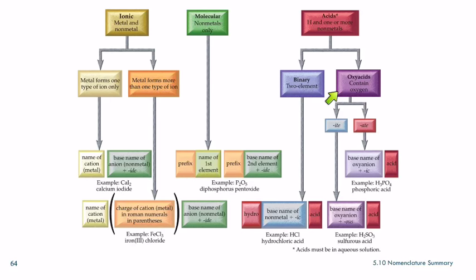So the acids we were just talking about, I'll follow this flowchart down here. There's the binary acids that have two elements, and then there's the oxy acids that have oxygen. From the oxy acids, you look at the name of the oxy anion. If it's -ate, you change the name to -ic acid.